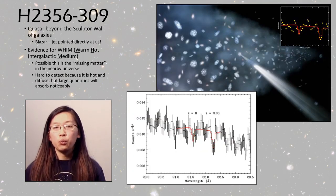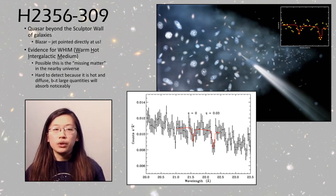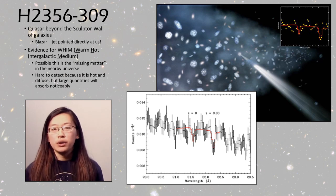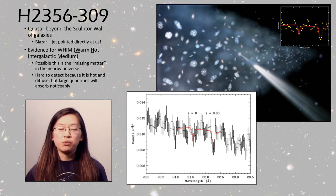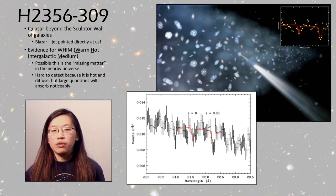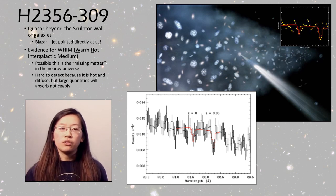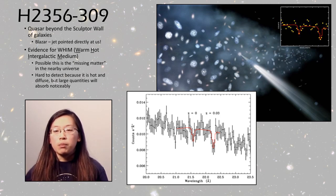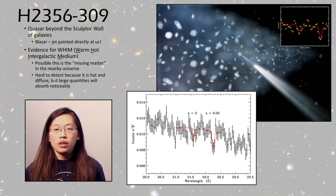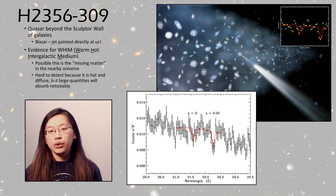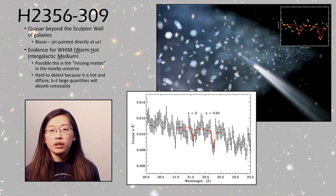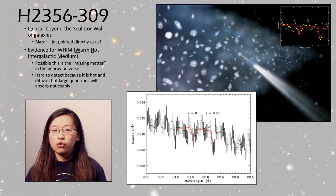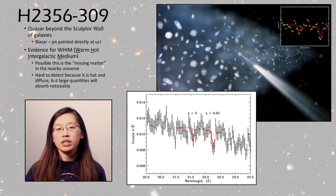Our next couple of DSOs have to do with WHIM, or Warm Hot Intergalactic Medium. The first, H2356-309, is a quasar beyond the Sculptor Wall of galaxies — a local structure containing many galaxies. This particular quasar is a blazar, meaning its jet is pointed directly at us, making it very bright with a very distinct spectrum. WHIM is one possibility for explaining the missing matter of the nearby universe — there's a lot of hydrogen, helium, etc. that we expect based on Big Bang theory, but we seem to have a shortage in the nearby universe. WHIM is very hard to detect because it's very hot and diffuse, but a quasar shining through the Sculptor Wall allows us to see the absorption from it.